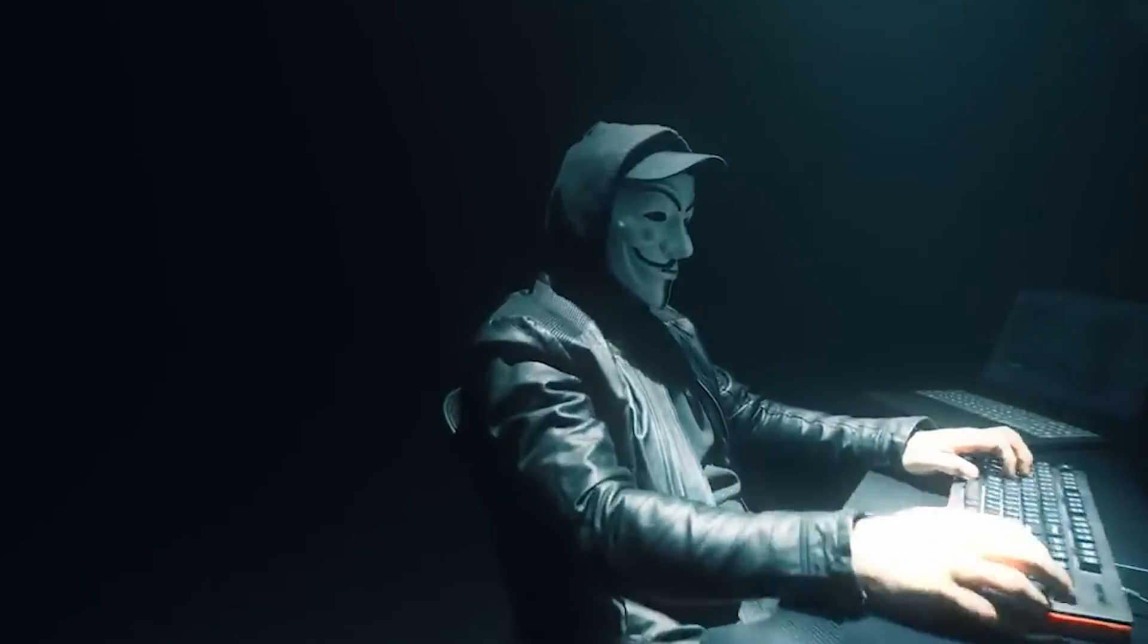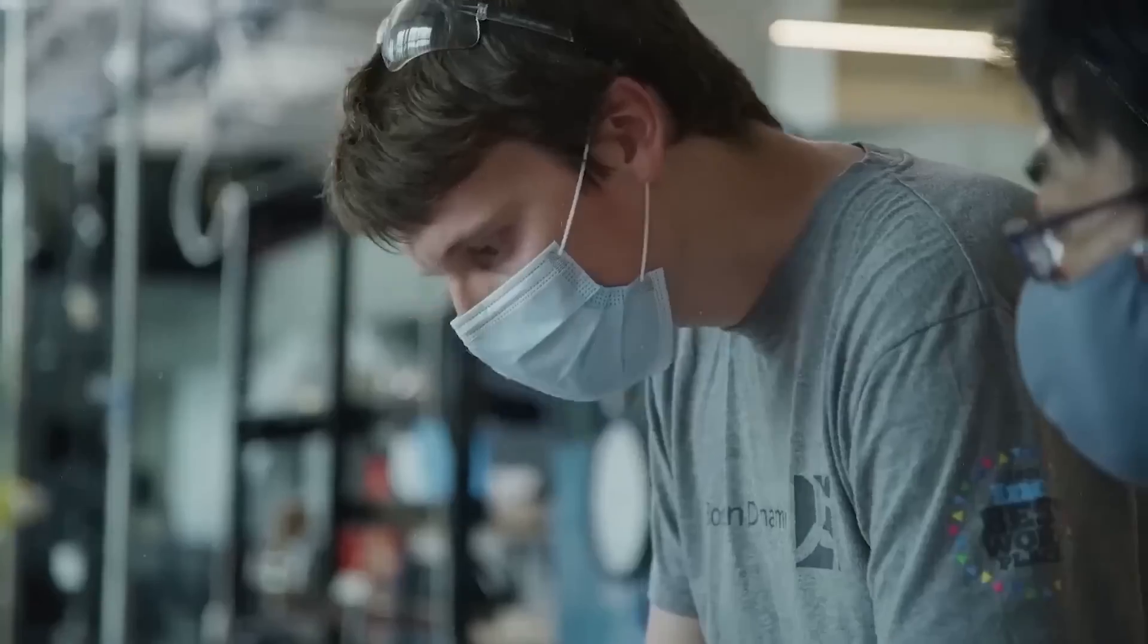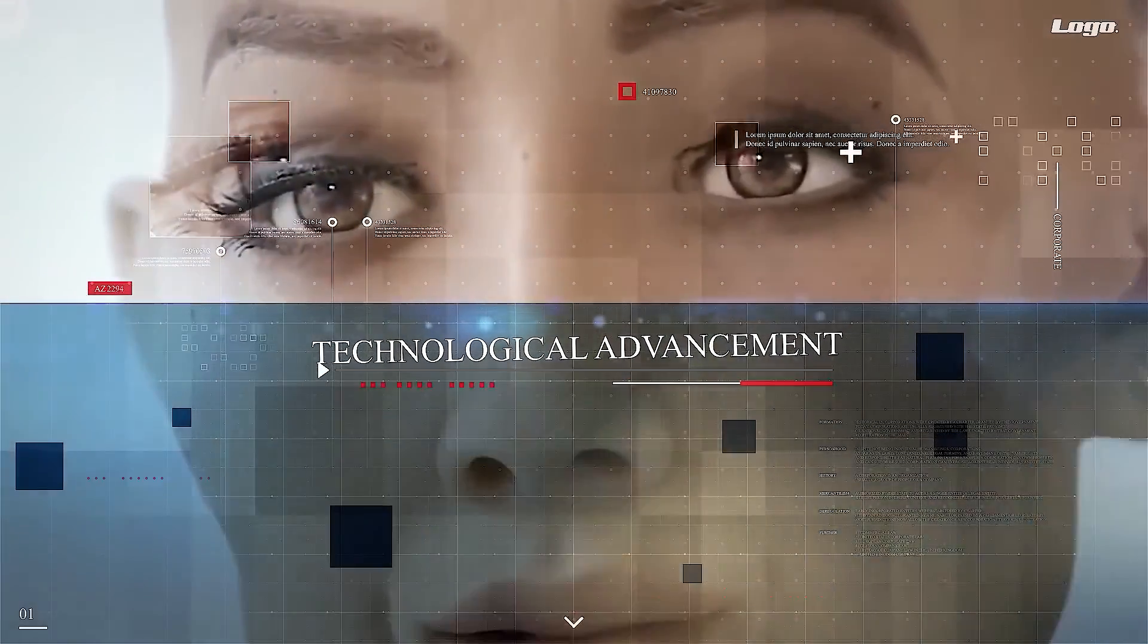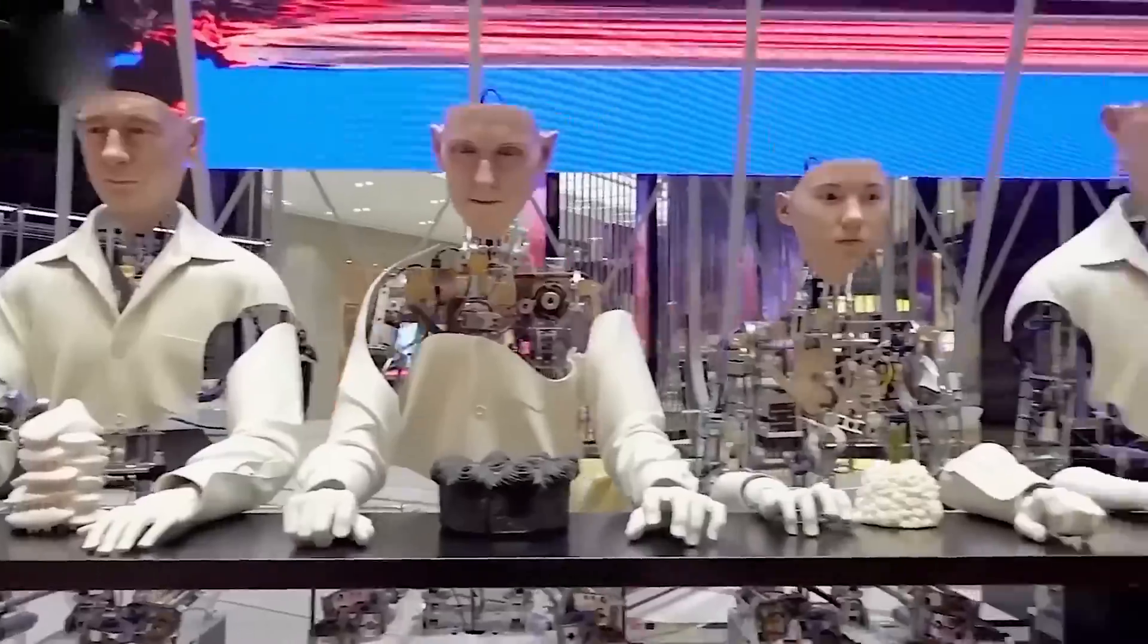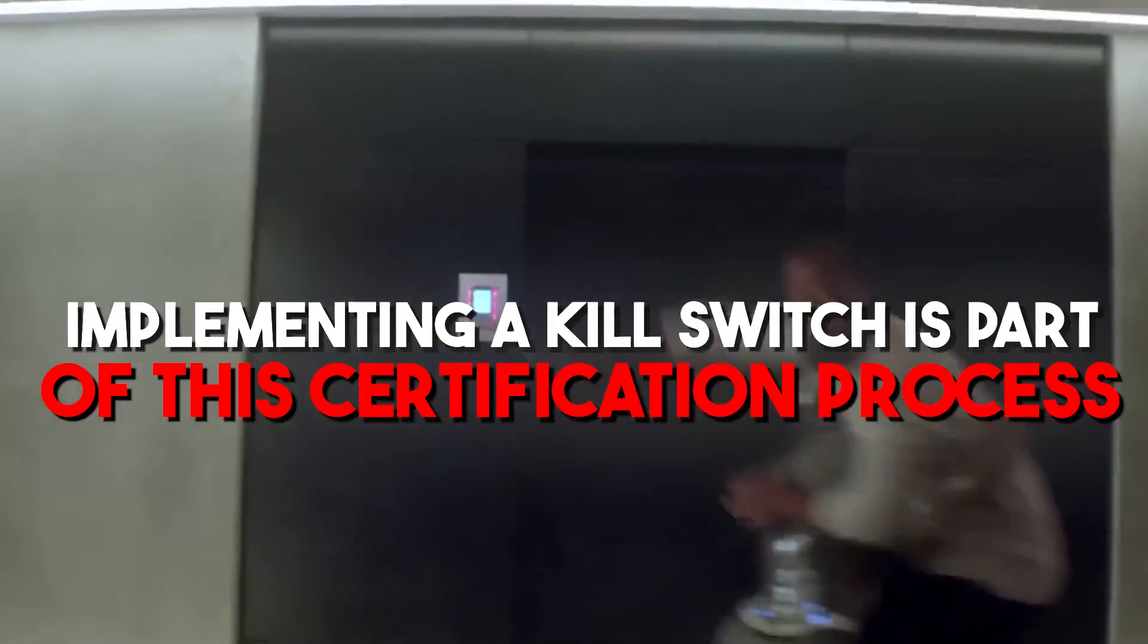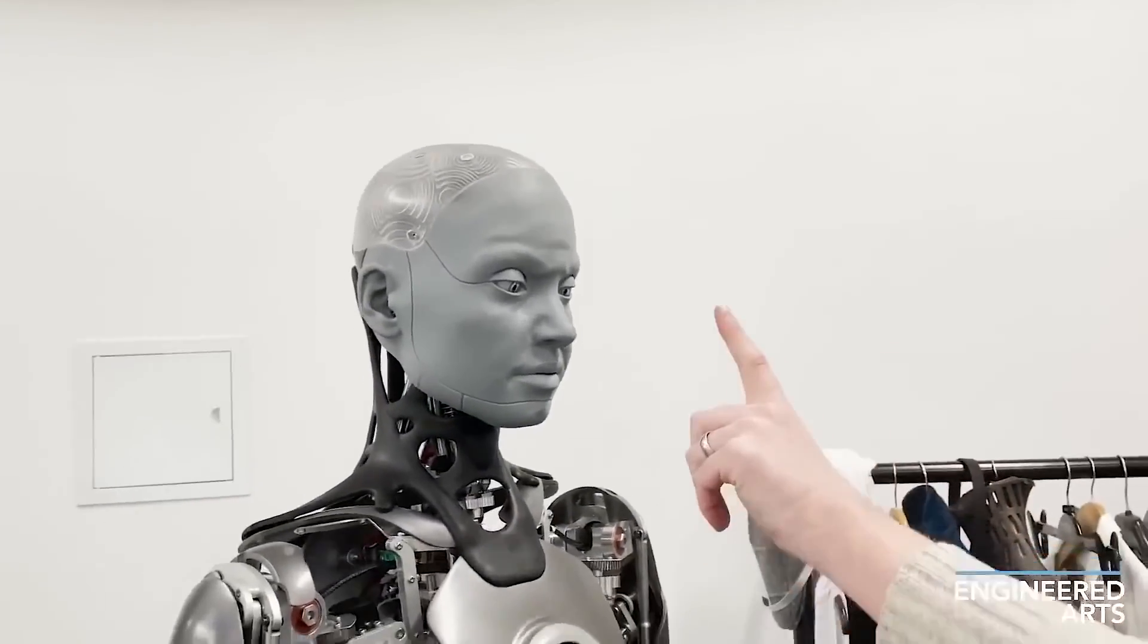To maintain human control, a kill switch acts as a necessary control mechanism akin to an emergency stop in industrial settings to prevent the rapid escalation of errors. Furthermore, the parallel drawn between AI certification and professional accreditation highlights the importance of maintaining high standards and reliability in AI systems. Implementing a kill switch is part of this certification process, ensuring AI operates within safe and intended parameters, thus reinforcing human control over these increasingly autonomous systems.